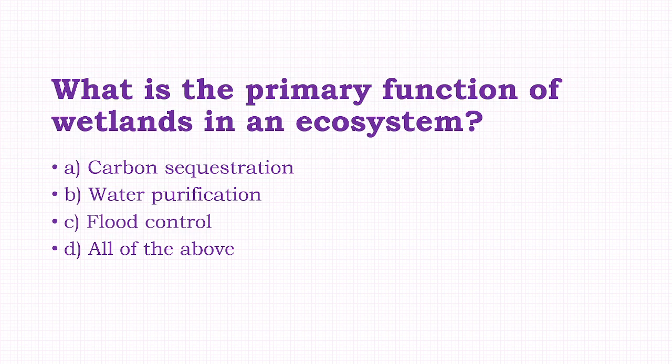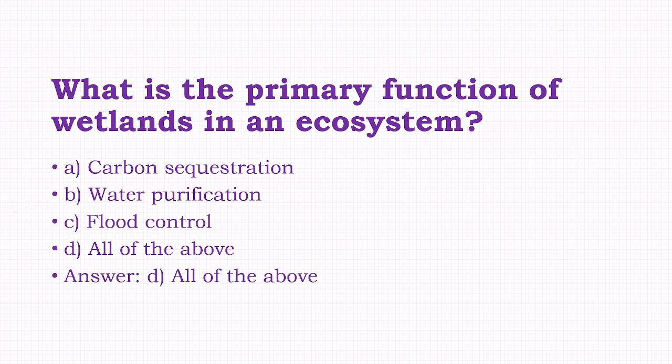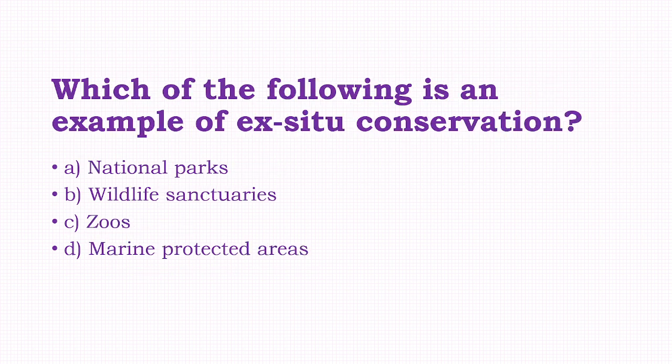What is the primary function of wetlands in an ecosystem? Options: carbon sequestration, water purification, flood control, all of the above. The answer to this question is option D, that is all of the above.